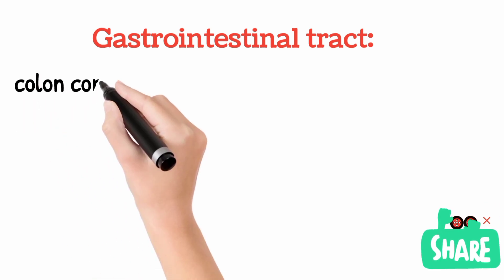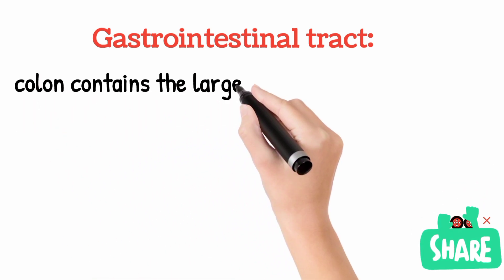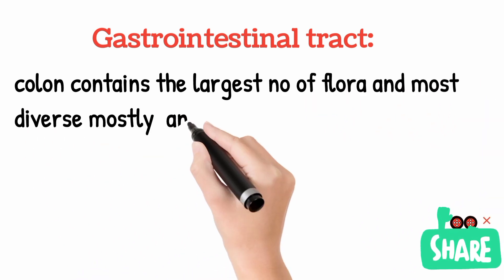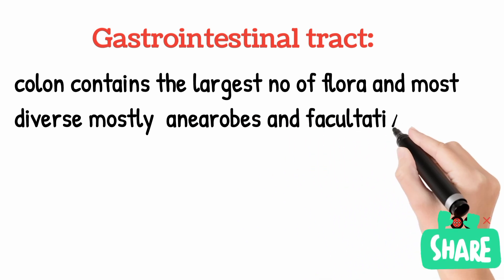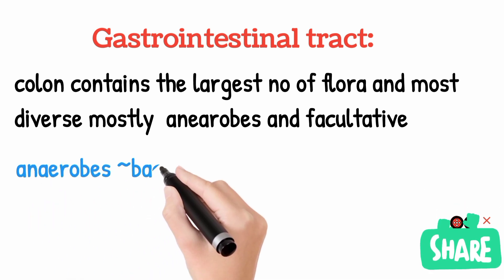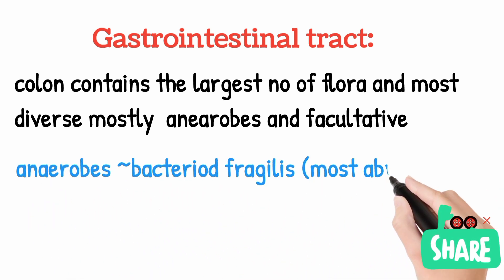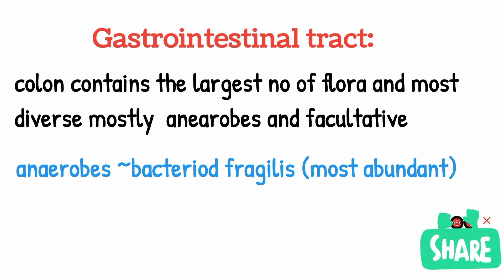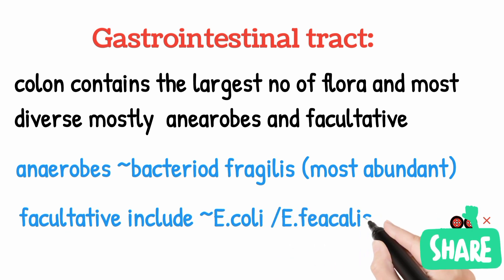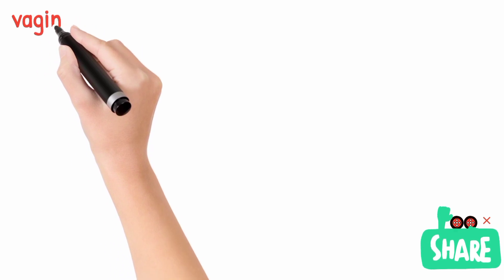In the gastrointestinal tract, the stomach has the least organisms due to its acidic environment and low pH. The colon has the largest number of flora, consisting mainly of anaerobes and facultative bacteria. Among anaerobes, Bacteroides fragilis is the most important and most abundant organism in the colon. Among facultative organisms, E. coli and Enterococcus faecalis are present.